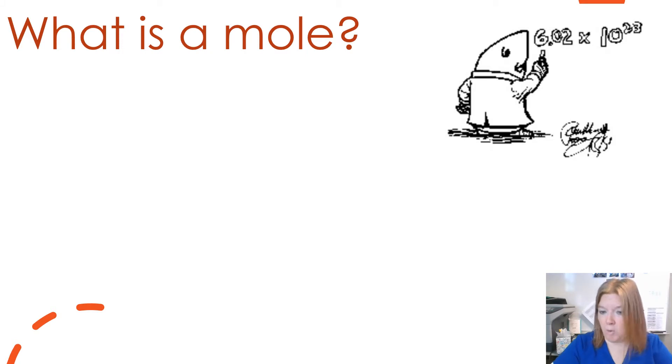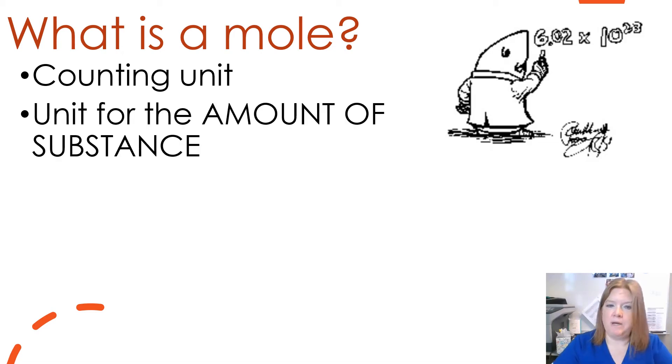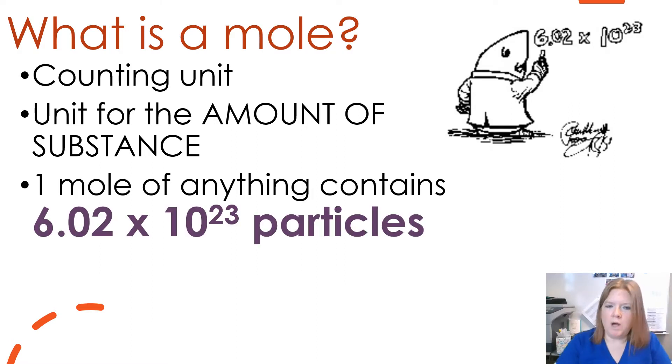So what is a mole? A mole is a counting unit, like a dozen. You know, a dozen means 12. But a mole is a counting unit that means the amount of a substance. So one mole of anything contains 6.02 times 10 to the 23rd particles. So to get to a dozen, that counting unit, you just have to go 1, 2, 3, 4, 5, 6, 7, 8, 9, 10, 11, 12, a dozen.